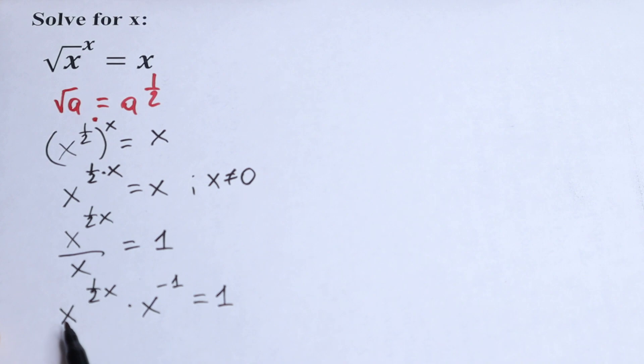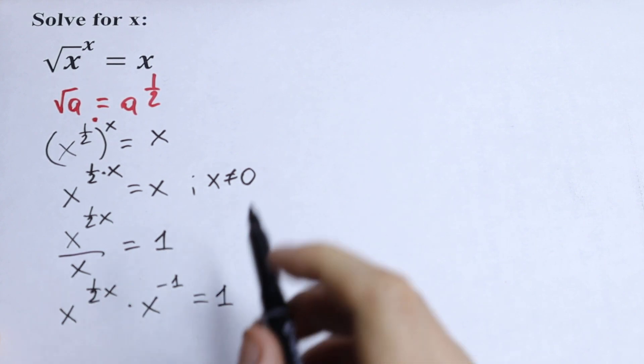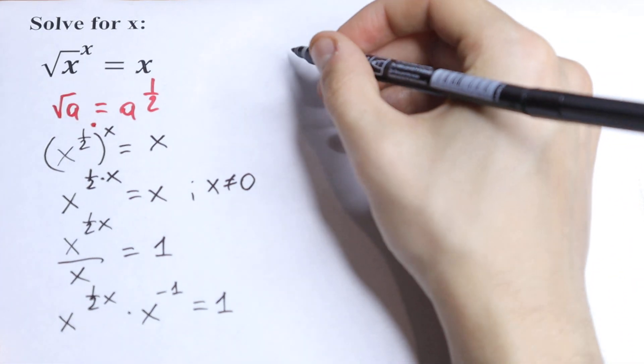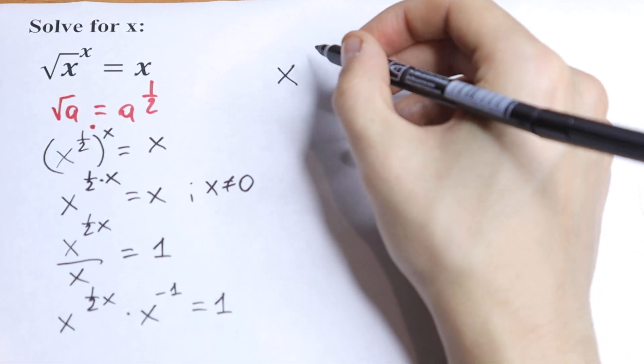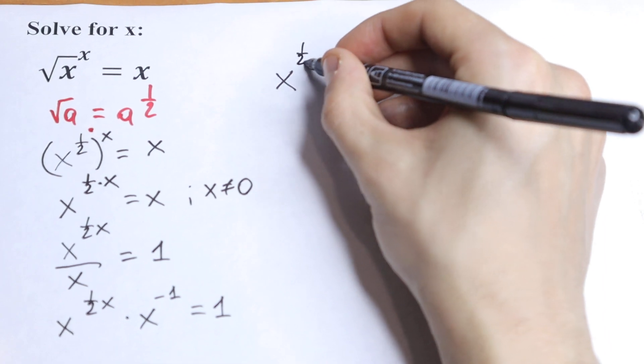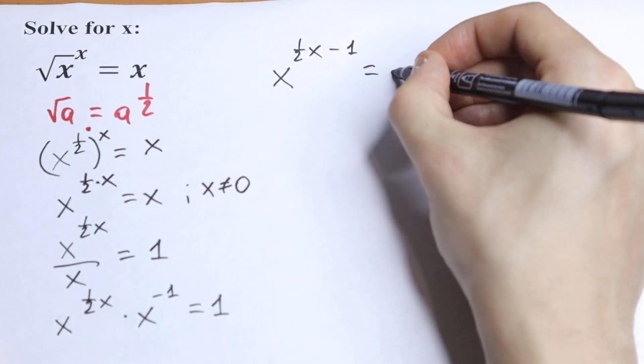We have a situation like that. We have the same basis and different exponents, but we can add these exponents. We can write this as x to the power ((1/2)x - 1) equal to 1.